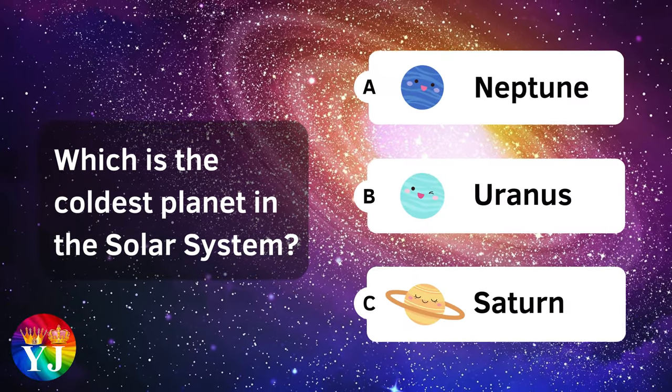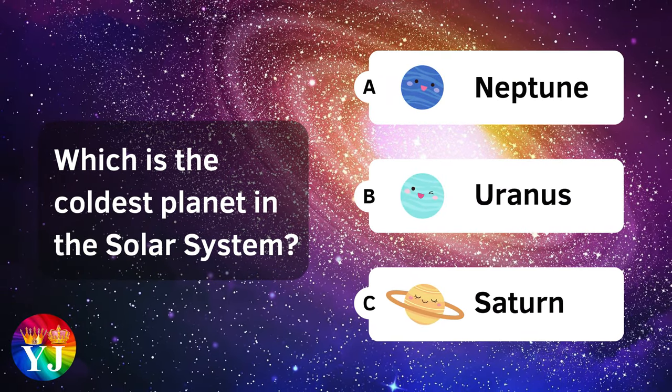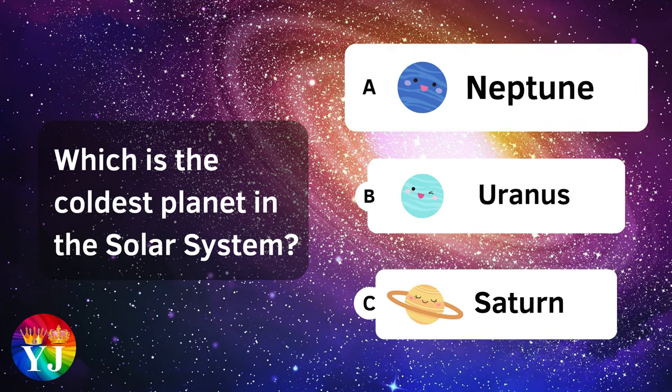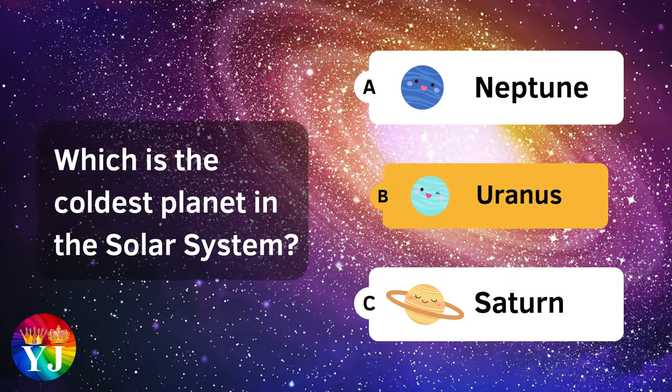Which is the coldest planet in the solar system? Uranus.